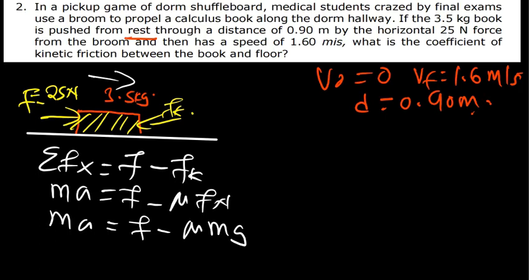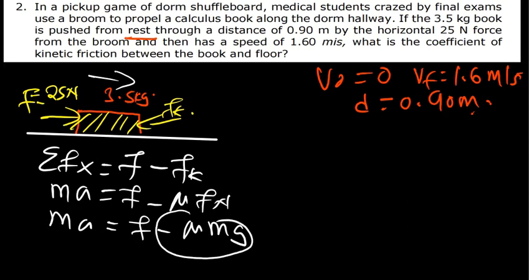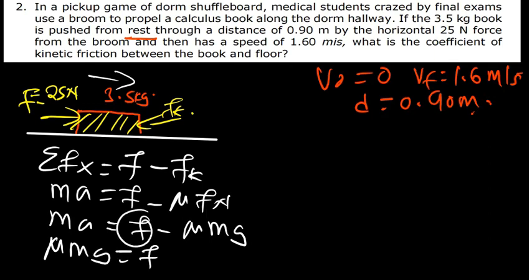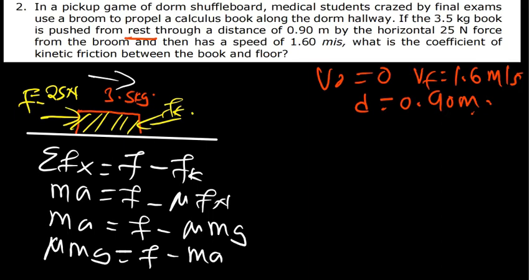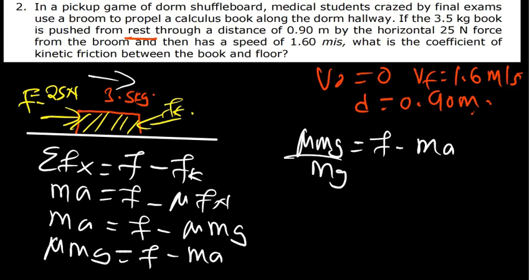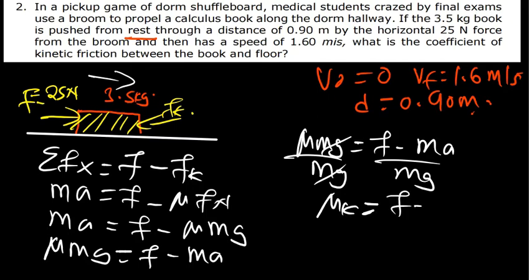Rearranging, mu times mg equals force minus mass times acceleration, so mu k equals force minus mass times acceleration, all divided by mass times g. We have the force (25 N) and mass (3.5 kg), but we need acceleration. Since we don't have time, we use the third kinematic equation: final velocity squared equals initial squared plus 2 times acceleration times distance.